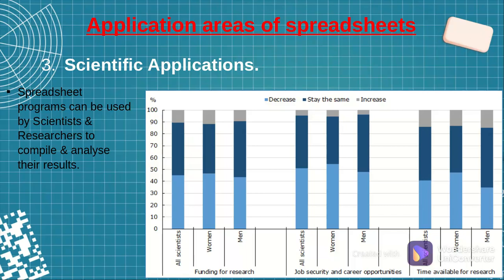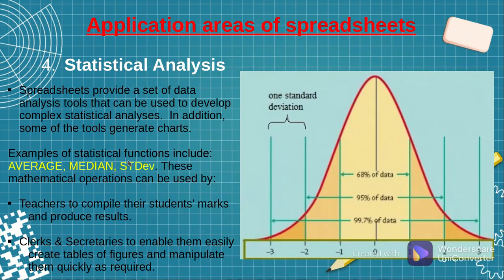Another area of application is scientific research, where scientists, when doing their research, enter the data collected into spreadsheets and then analyze their results before coming up with conclusions or making decisions. Another area is statistical analysis. When we hear the term statistics, things like average, median, standard deviation, and mean come to mind — these are some of the tools we normally use to do statistics. The same example of a teacher compiling student marks arises here, because we are going to find the mean, the average, deviation, and many others.